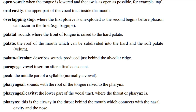Overlapping stop: where the first plosive is unexploded as the second begins before plosion can occur in the first, e.g. back pipe. Palatal: sounds where the front of the tongue is raised to the hard palate. Palate: the roof of the mouth, which can be subdivided into the hard and the soft palate. Palato-alveolar: describes sounds produced just behind the alveolar ridge.